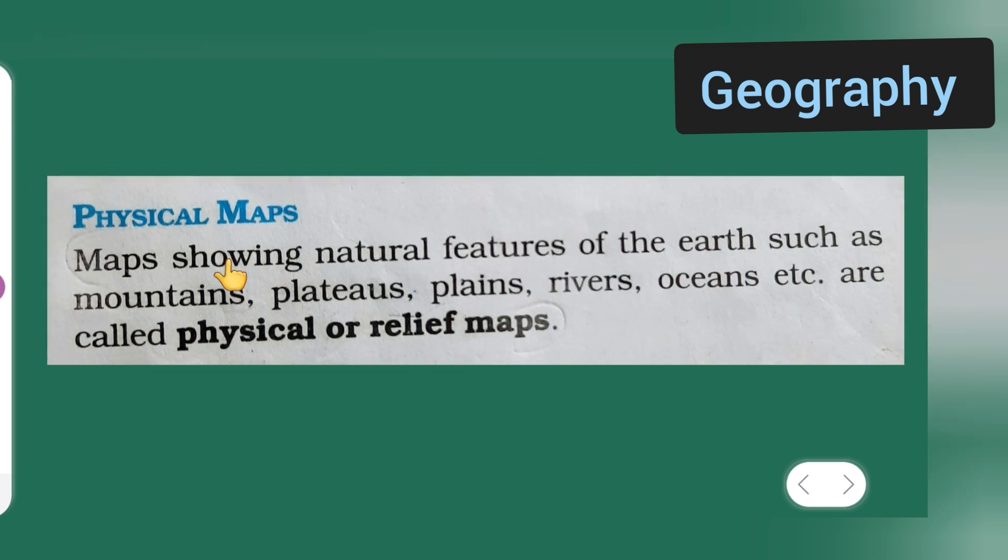Physical maps: maps showing natural features of the earth such as mountains, plateaus, plains, rivers, oceans, etc. are called physical or relief maps. They are even called relief maps.